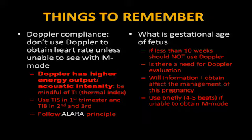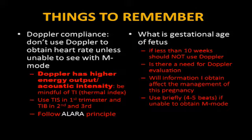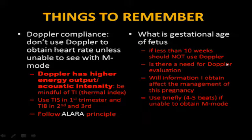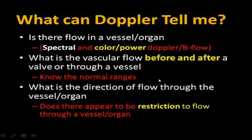Be mindful of your thermal index. In the first trimester we should be using TIS — thermal index soft tissues — and in the second and third trimester, TIB — thermal index bone. They're all listed on your machine. Follow the ALARA principle. For gestational age less than 10 weeks, no spectral Doppler. Doppler only if there's something you need to obtain, so always try to go with M-mode first.